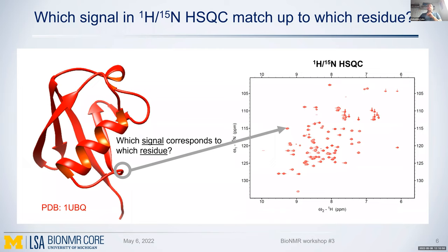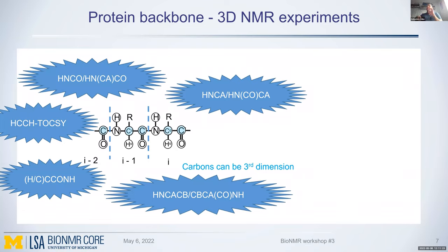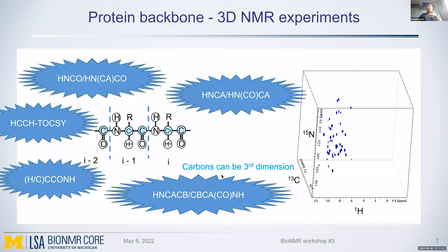In the protein backbone, you don't just have nitrogen and hydrogen - you also have aliphatic carbons and carbonyl carbons. We can use these carbons as the third dimension. Think of it like a cube where one axis is hydrogen, one is nitrogen, and the third is carbon. Different experiments can look at aliphatic carbons or carbonyl carbons depending on the experiment.